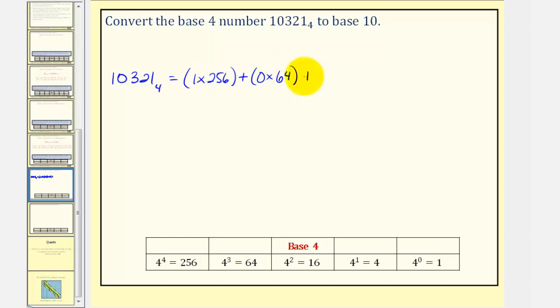Plus we have a 3 in the 4 to the second, or 16 place value. So we have 3 times 16, plus we have a 2 in the 4 to the 1's place value, or just 4's place value. So we have 2 times 4, plus we have a 1 in the 1's place value, so we have 1 times 1.